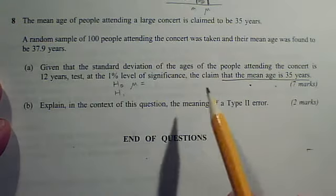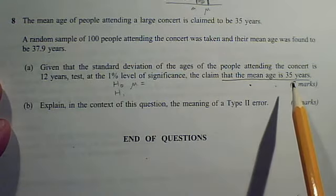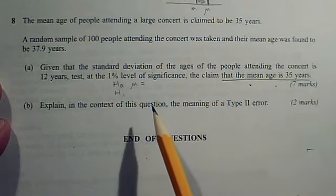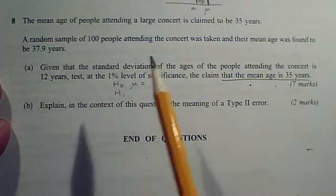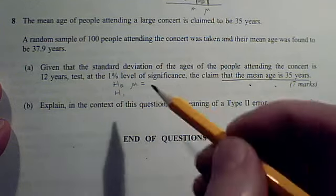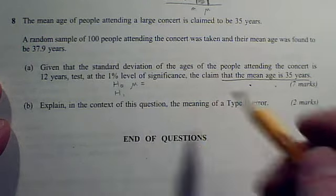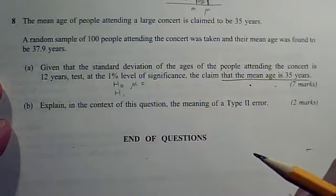If we're going to reject the claim that the mean is 35 years, what's the alternative option we're going at? Do we have a preference for being less than or greater than? Or is the alternative simply going to be that mu does not equal 35 years, in which case it will be a two-tailed test?